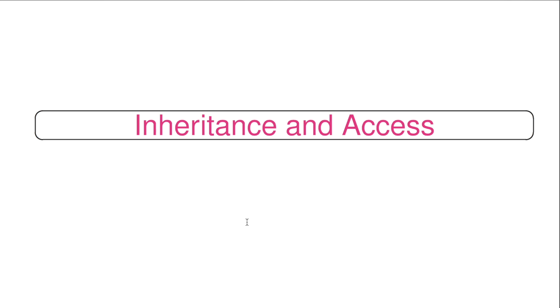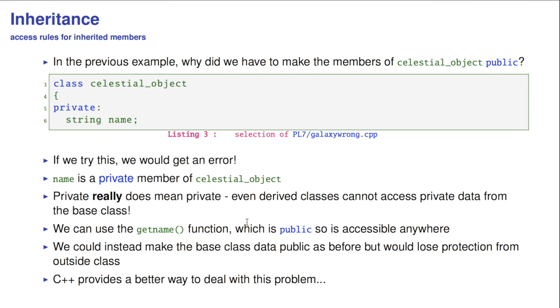Now, we said we were going to do something about access, and access is really the public statement. So if we actually had kept the private declaration in celestial object, then we would get errors if we tried to access name in the class below it. Because name is a private member of celestial object, and private really does mean private. Even derived classes cannot access private data from the base class.